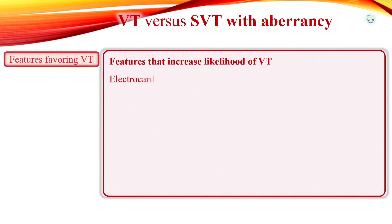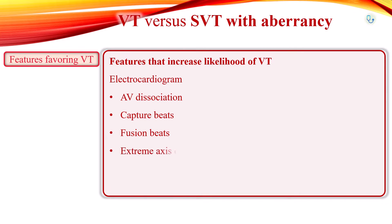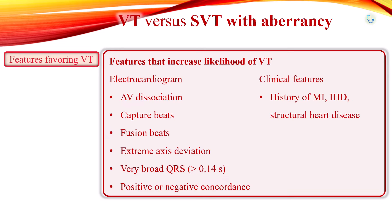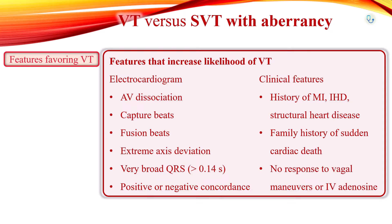EKG features that increase the likelihood of ventricular tachycardia are: atrioventricular dissociation, capture beats, fusion beats, extreme axis deviation, very broad QRS complexes more than 140 ms, positive or negative concordance in precordial leads, history of myocardial infarction, ischemic heart disease, structural heart disease, family history of sudden cardiac death suggesting conditions like hypertrophic obstructive cardiomyopathy, Brugada syndrome, congenital long QT syndrome, or arrhythmogenic right ventricular dysplasia, and VT shows no response to vagal maneuvers like carotid sinus massage or intravenous adenosine.